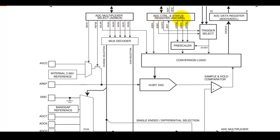Using the ADCSRA register you can enable the ADC — ADEN is the ADC Enable bit. You can start the ADC conversion using the ADSC bit of the ADCSRA register. There are two options to start ADC conversion: one is the ADSC and the other is the ADC Automatic Trigger Enable. There is also the ADC Interrupt Conversion Flag.